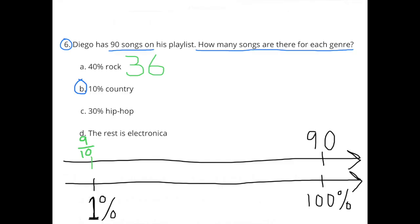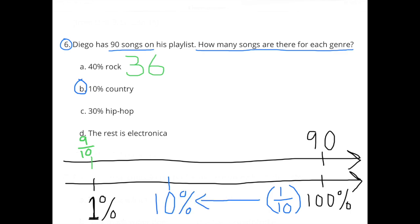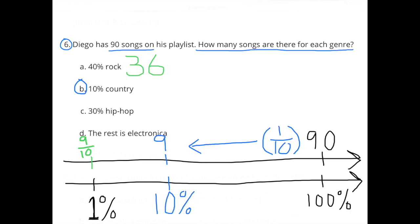B: 10% country. Using the same double number line, I multiply 100% by 1 tenth to get 10%, and multiply 90 by 1 tenth to get 9. Diego has 9 country songs on his playlist.